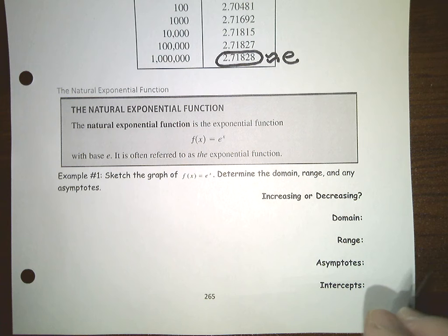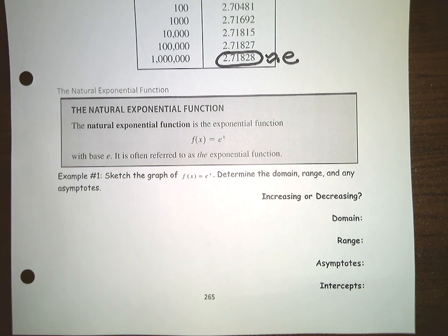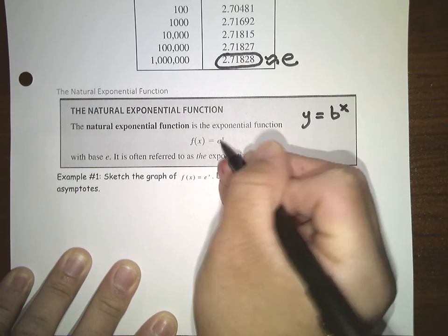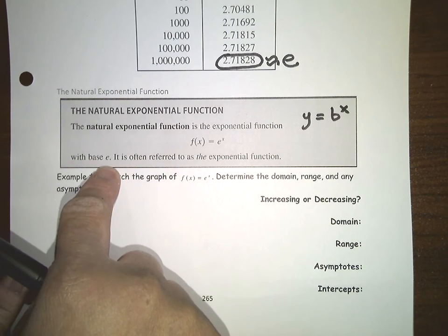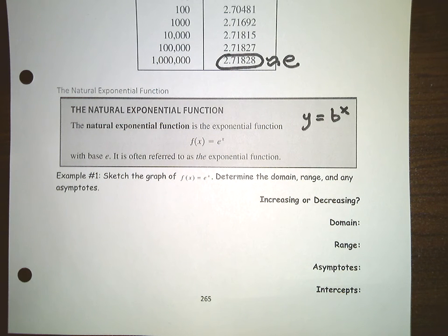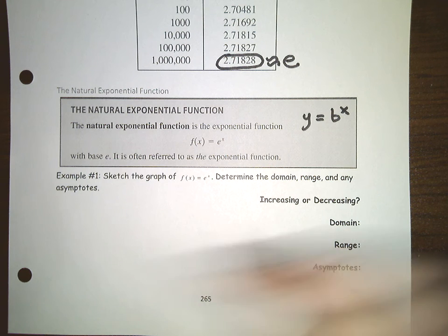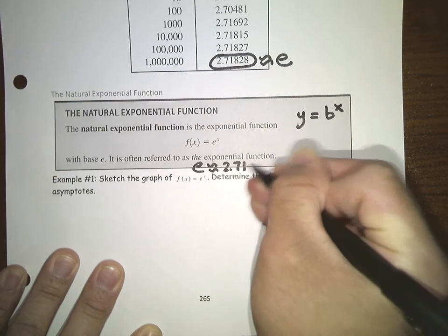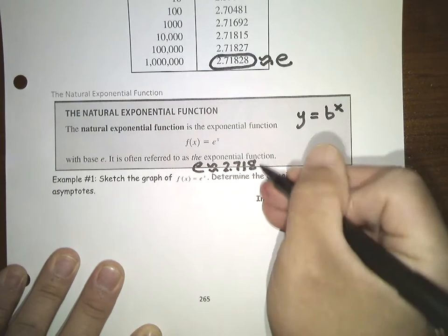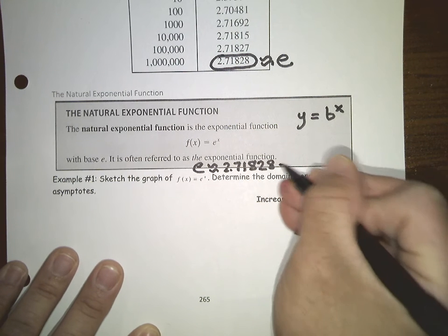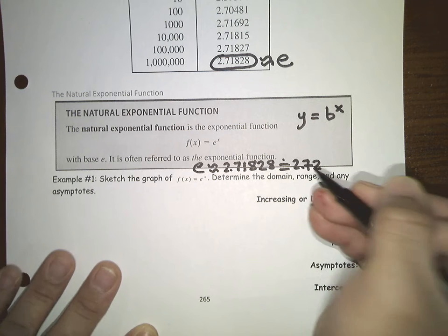The natural exponential function is really the same as y equals b to the x, but now b is just equal to e. Since e is approximately 2.718 — you can see about 2.8 up there — most people use 2.72 as a quick approximation.